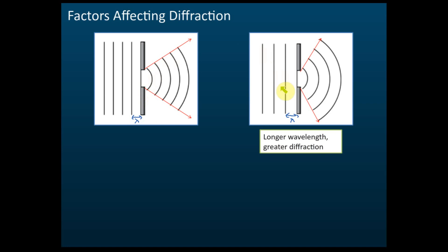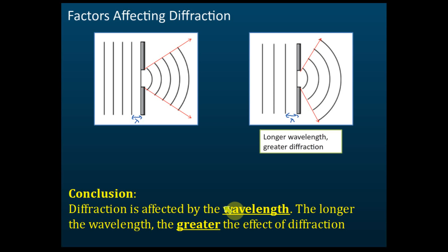From these experiments, we can conclude that the longer the wavelength, the bigger the angle of diffraction, or the greater the magnitude of diffraction — the wave will be diffracted more. So longer wavelength means greater diffraction. Conclusion: diffraction is affected by wavelength — the longer the wavelength, the greater the effect of diffraction.